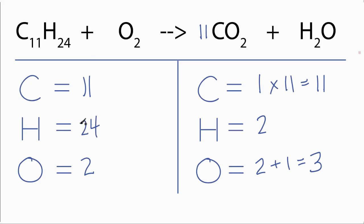Then I have 24 hydrogens here and only 2. So let's say 12 times 2, that'll give us 24. So now the carbons and hydrogens are balanced.